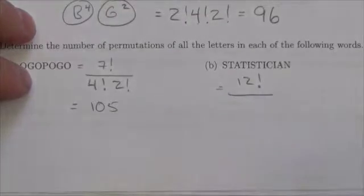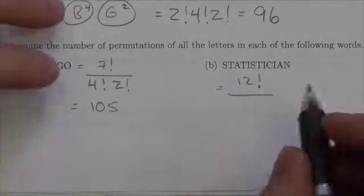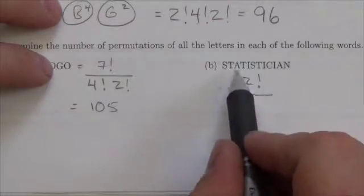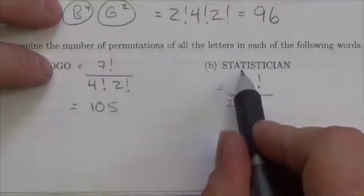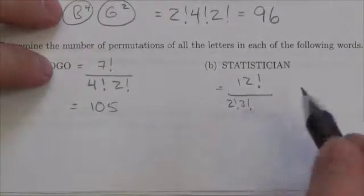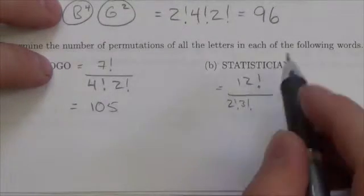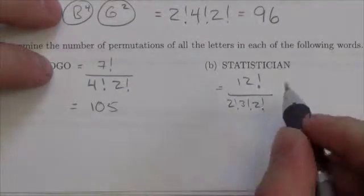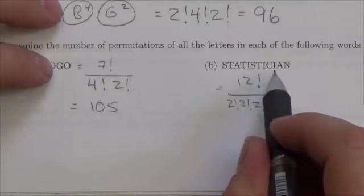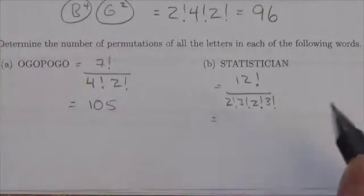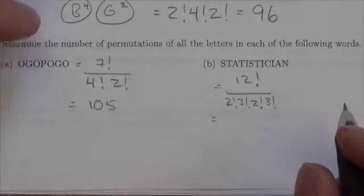So 12 factorial ways you can permute all of those, as if they're all different. And now we've just got to look for repetition here. And there's a bunch. Okay, there are two S's. There are three T's. We've got two A's. We've got three I's. And that's it. That's all that we've got there in terms of repetition.